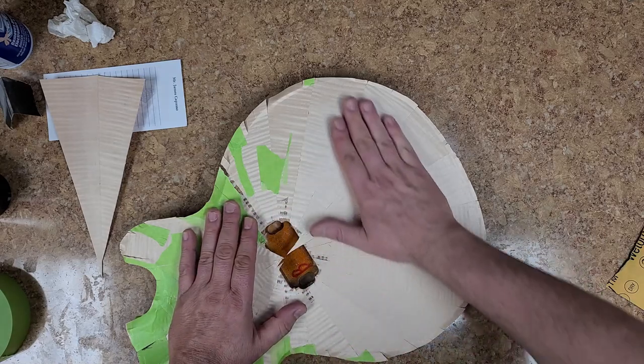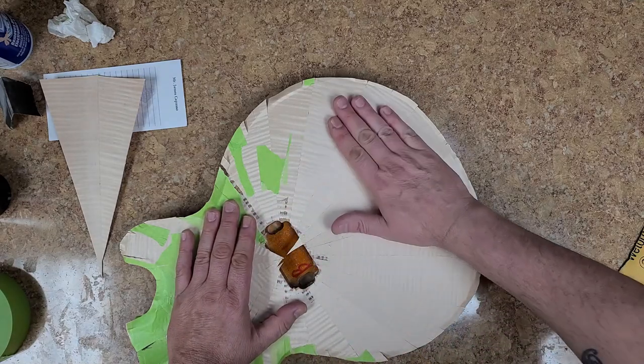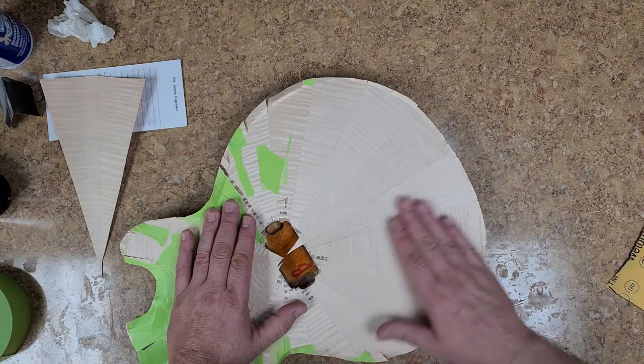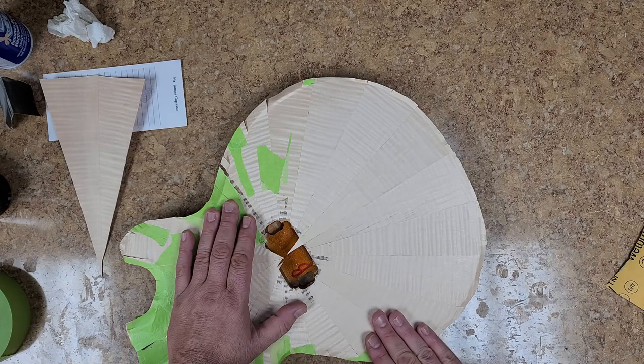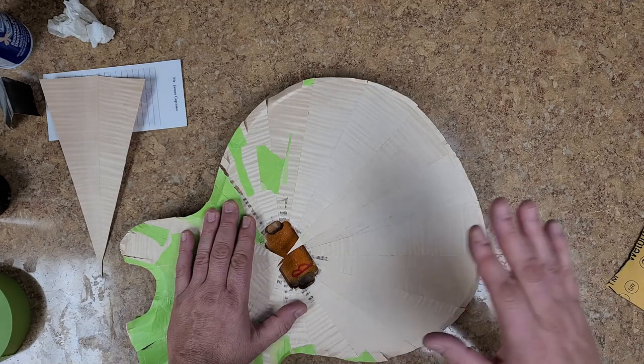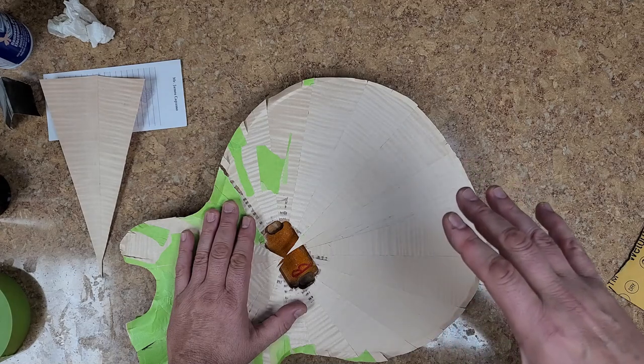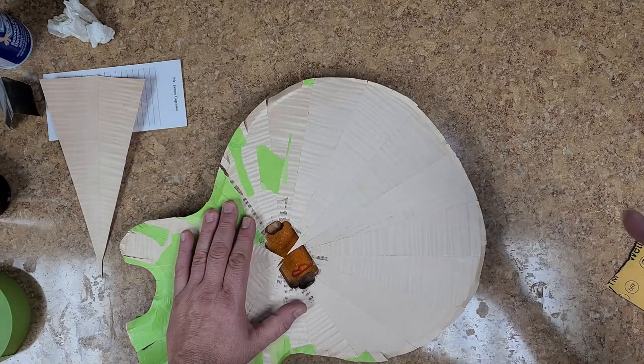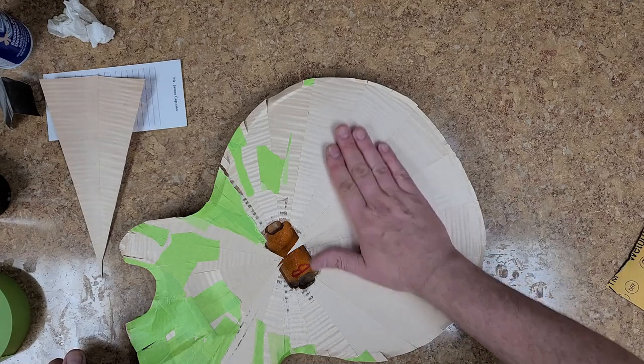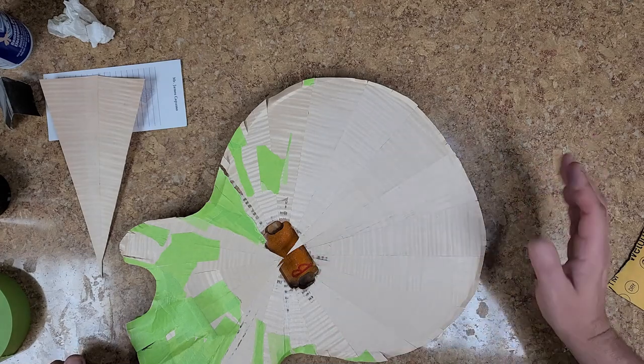But when you rub your hand over it, I can kind of feel that some of the seams overlapped a little bit, which I'm not happy about. And some of the gaps opened up between the seams. So, I'm looking at it. It's not bad. And I could probably sand the overlapping down, but I don't like it. I'm not happy with it.